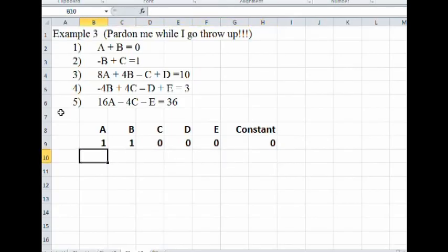Okay. Over here to the second equation. A is missing. So that's going to be zero. B is negative one. C is 1. D and E are both zero. And the constant term is one.